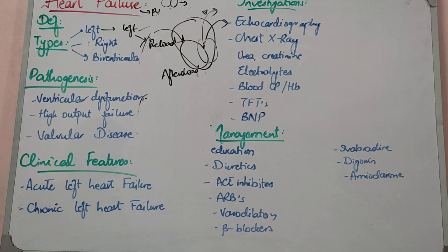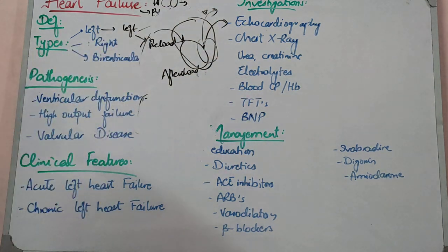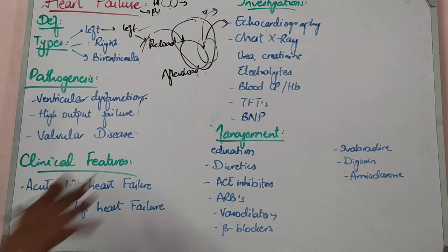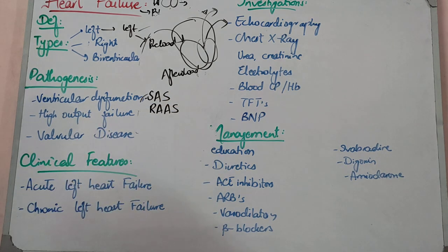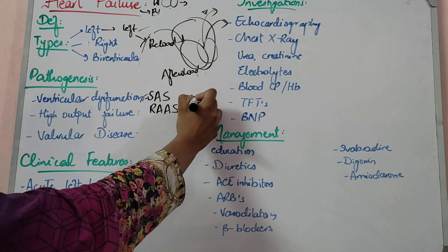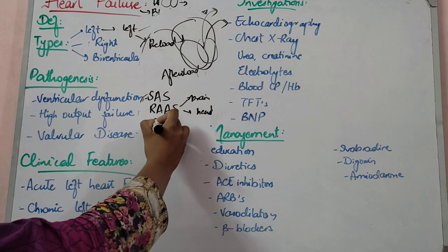When cardiac output decreases, the body activates two systems: the sympathetic nervous system and the renin-angiotensin-aldosterone system (RAAS). Blood is redirected to vital organs — brain, heart, and lungs — and away from other organs. The GIT and kidneys are particularly affected. When the kidneys sense inadequate blood volume and pressure, they activate the RAAS.